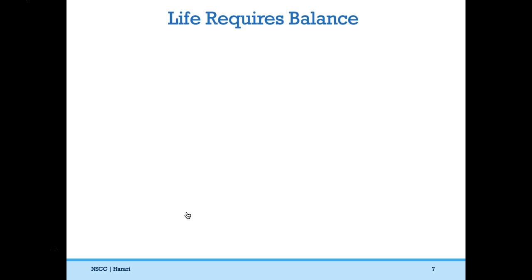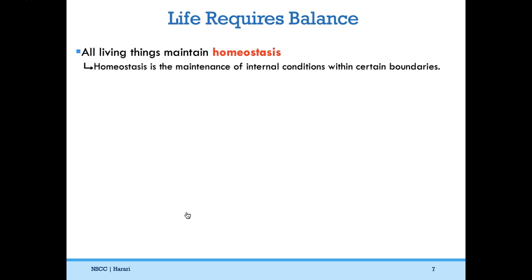We'll talk now about what characteristics are shared by all living things, starting with the fact that life requires balance. All living things maintain homeostasis, which is the maintenance of internal conditions within certain boundaries. In other words, homeostasis is a biological balance. All living things are made of cells and all living things require this biological balance.